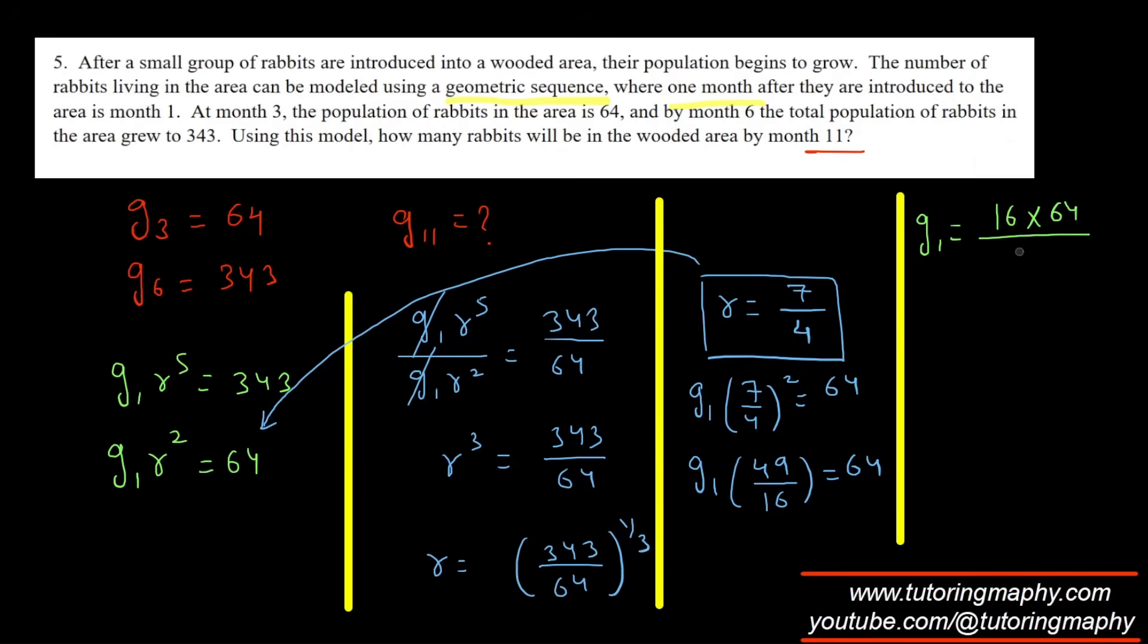So what is g11? g11 is going to be g1 times r raised to 10, which is 16 times 64 over 49, and r raised to 10 will become 7 over 4 raised to 10. I'm just going to box this as my answer.